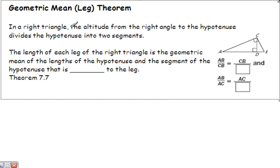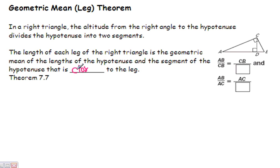Our second Geometric Mean Theorem deals with the leg. It states that in a right triangle with an altitude drawn that divides it into two segments, the length of each leg is the geometric mean of the lengths of the hypotenuse and the segment of the hypotenuse that is closest to that leg. For example, if we're talking about leg CB, the segment closest to it is DB. If we're talking about leg AC, AC is the geometric mean, and the segment closest to it is AD. I have another memory aid for this one too.